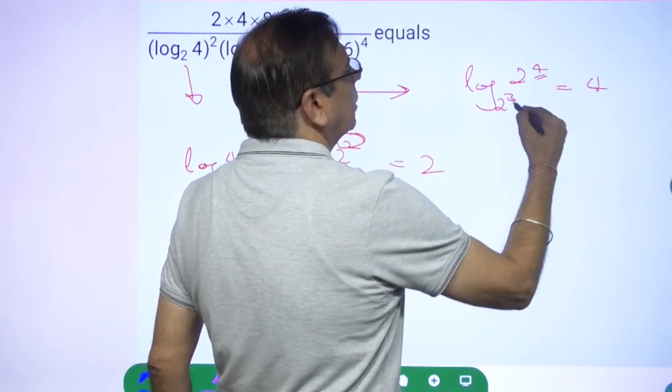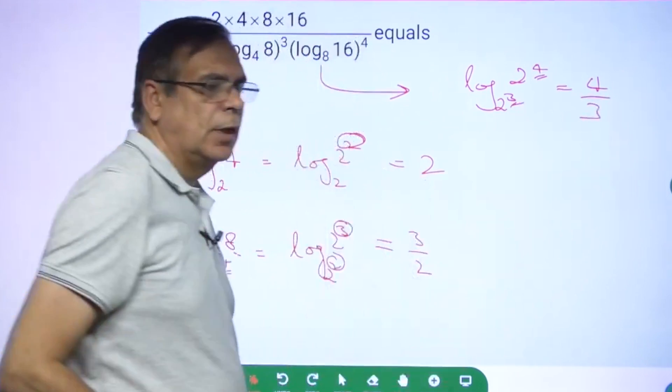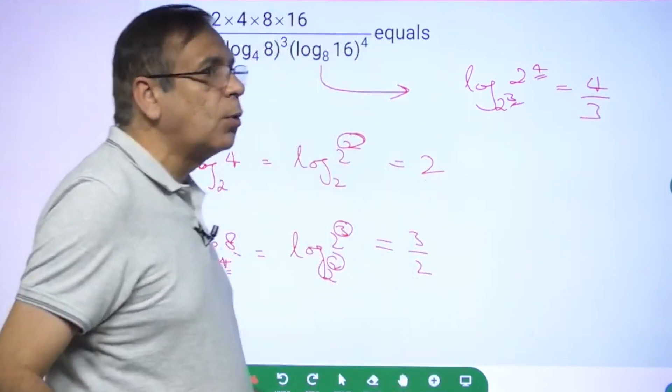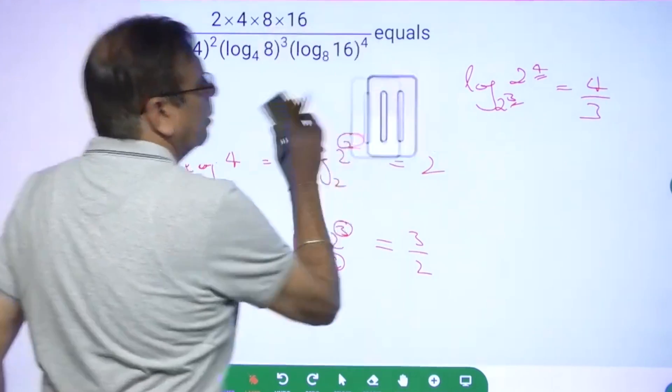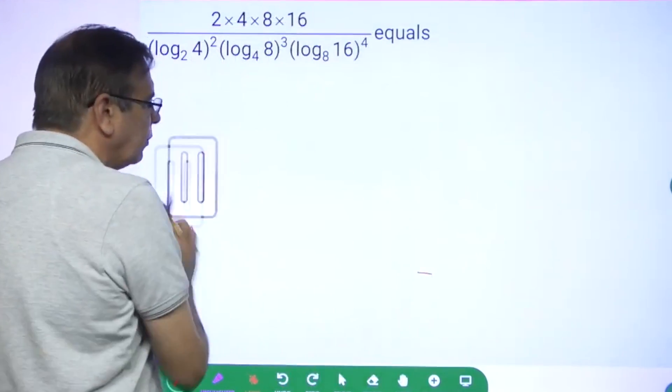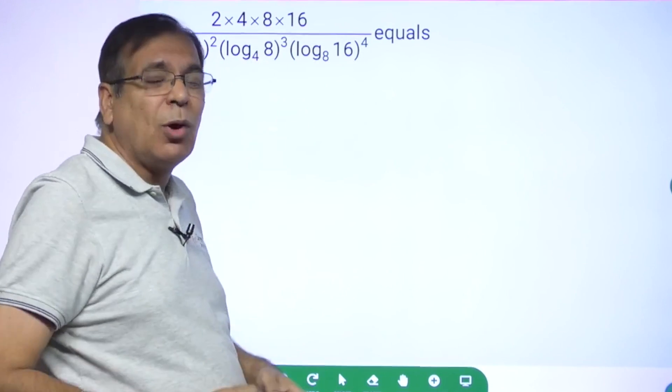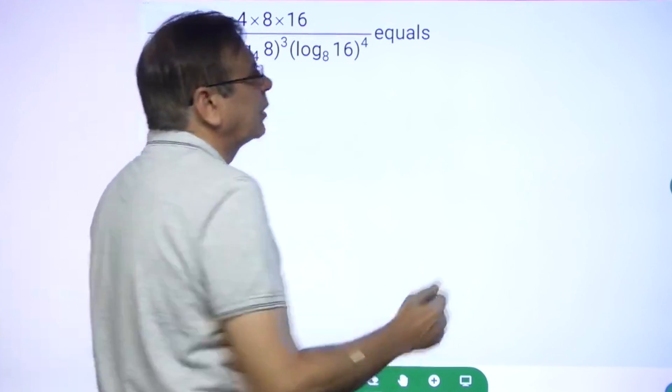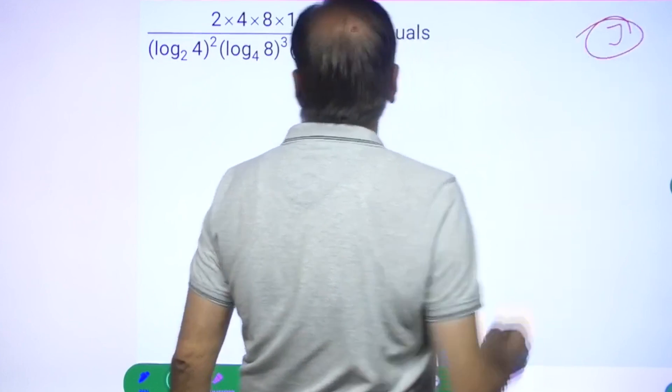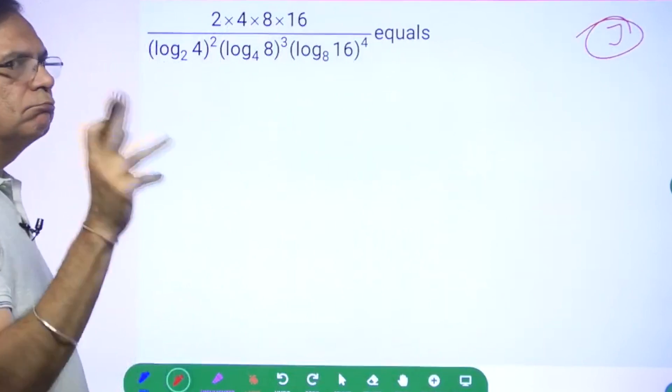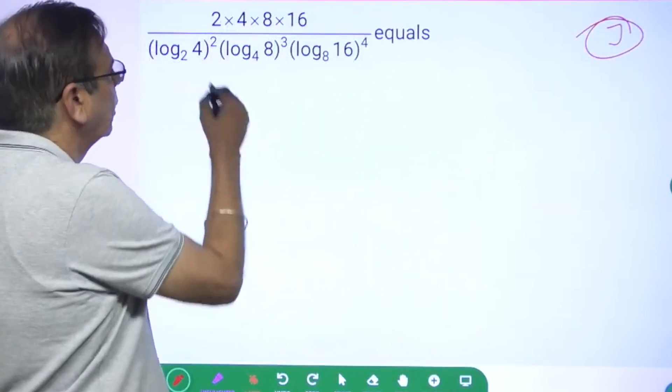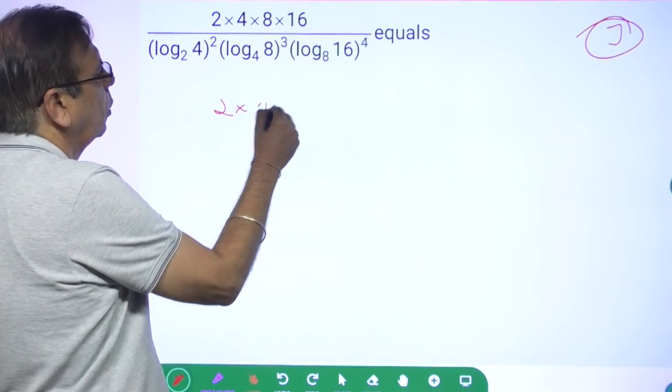Okay, now this is the rule which I want you to remember. If you remember this rule, this is a question which you can do very fast. If you have to convert everything to base 2 and then solve, it is going to waste a lot of time for you. So the rule here is essentially to use this particular technique. So what is the value going to be? 2 into 4 into 8 into 16.